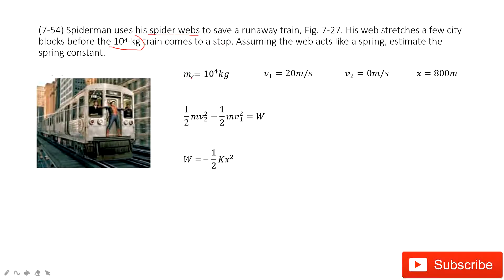For this problem, we list the known quantities. We know the mass of the train, the initial velocity, the final velocity. What else? We also know the displacement - how much the spiderweb moves.